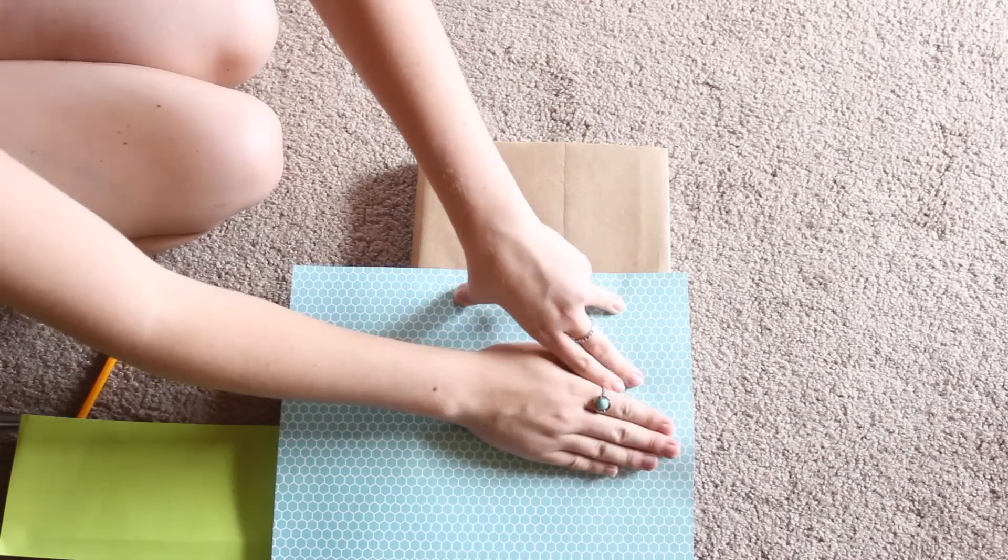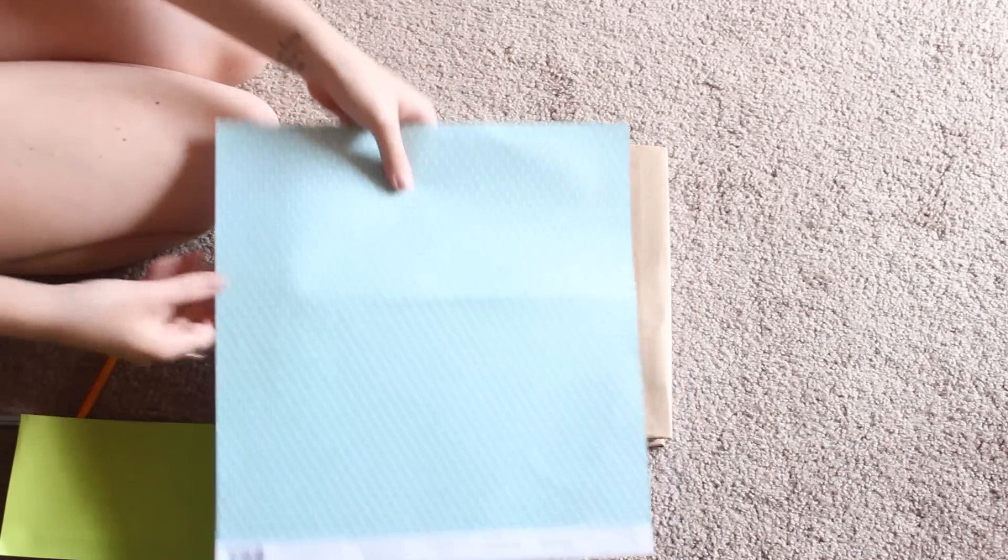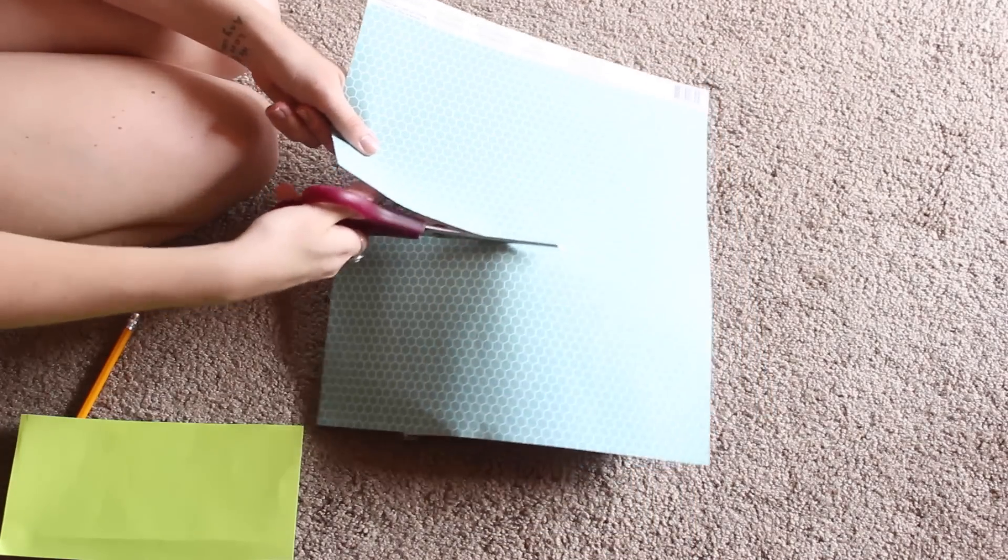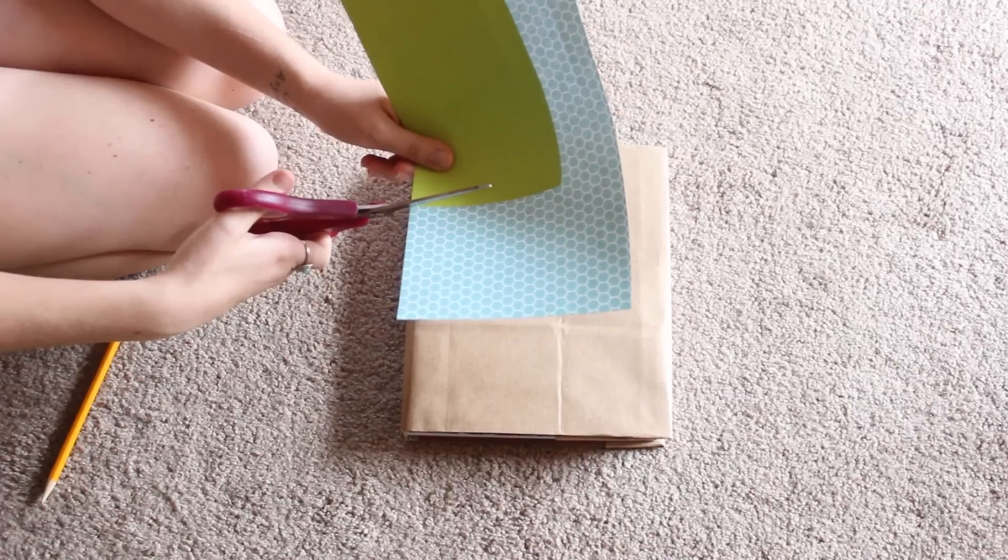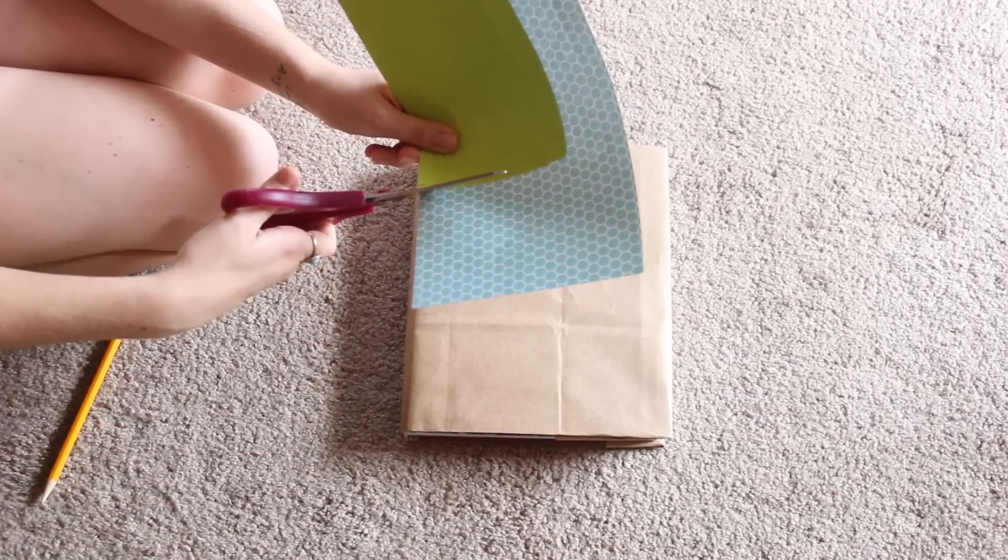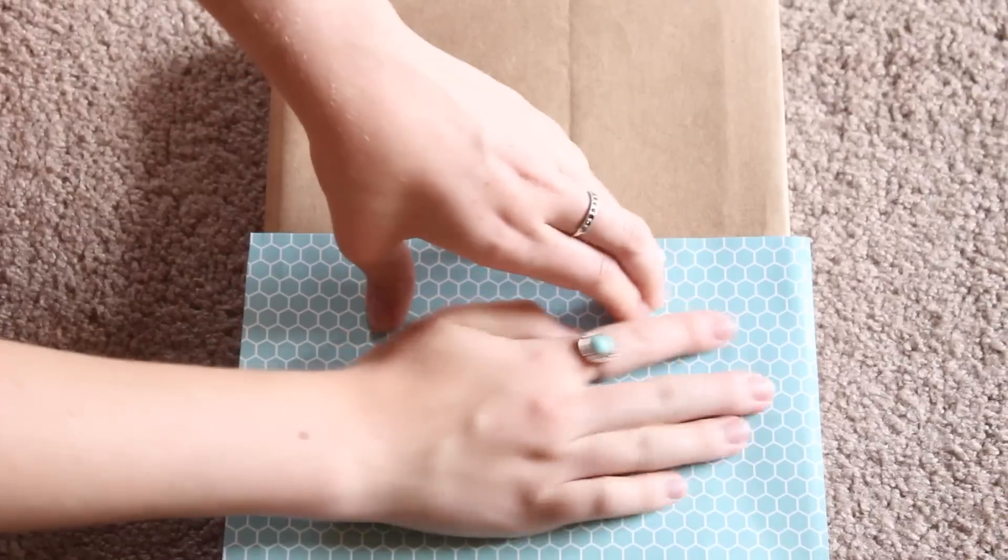And once again, you're just making a nice rough cut of that. And then you're going to repeat that same exact process with the other pocket. And then you want to use the first pocket to sort of create a template for your second pocket. Once again, that way they can be the same size.